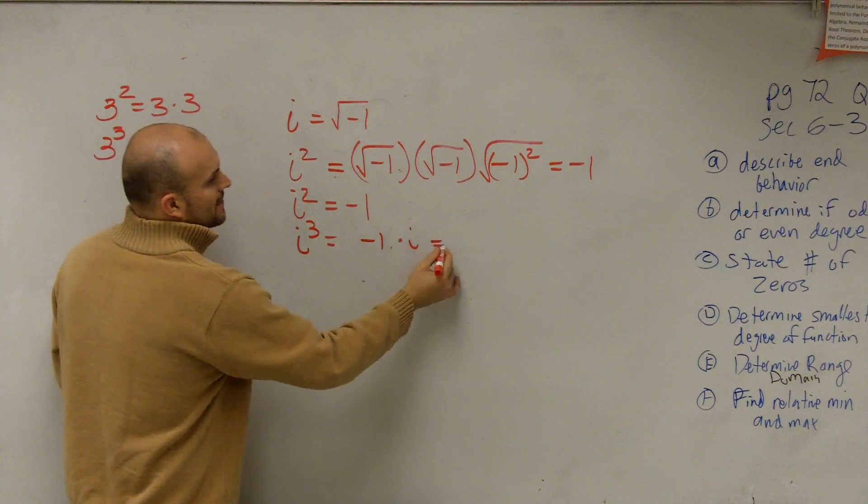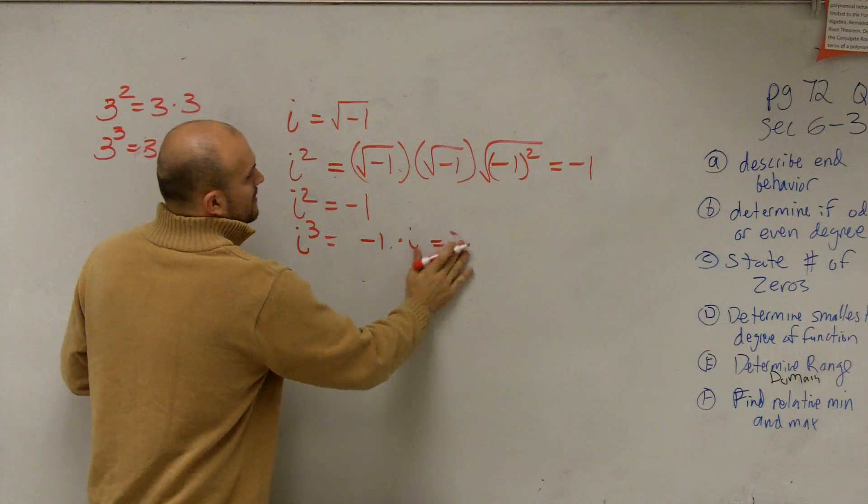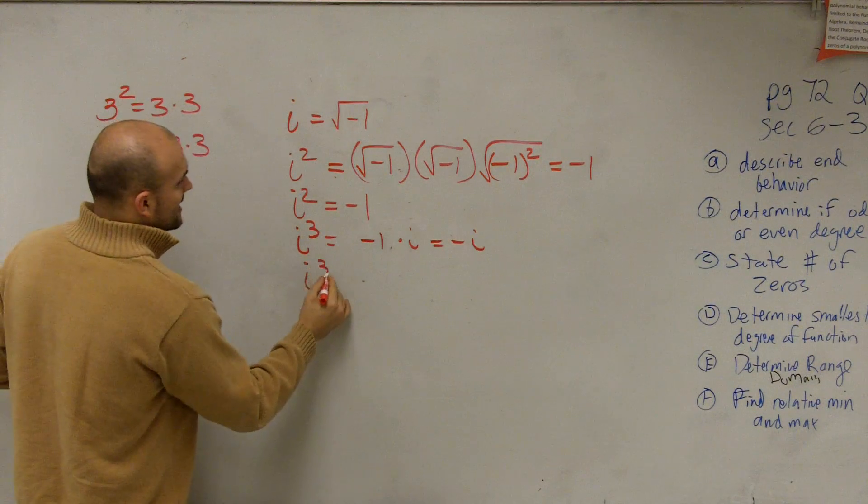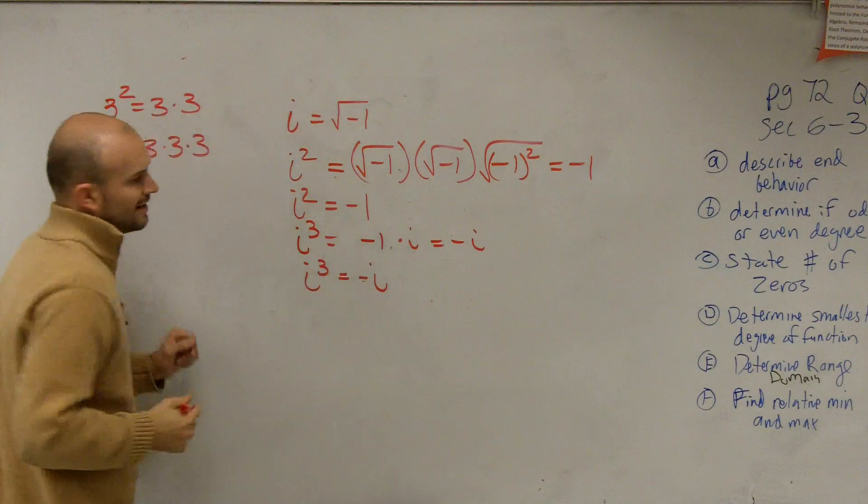What's negative 1 times i? Negative i. So therefore, i cubed equals negative i.